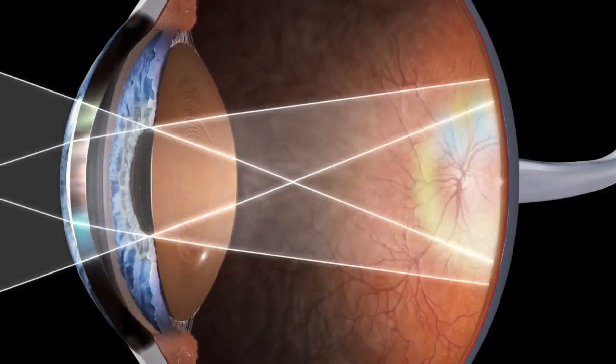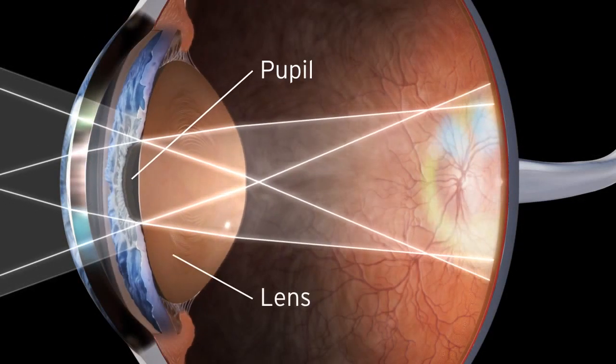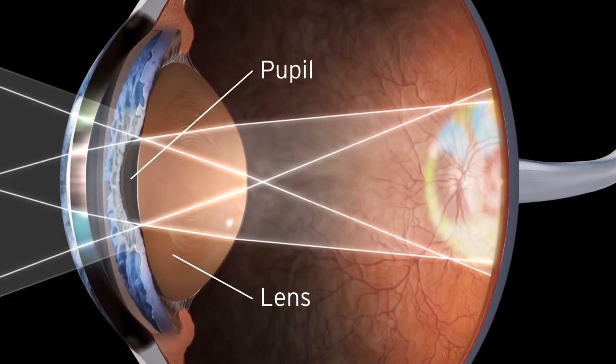Continual adjustments to the pupil and lens regulate the entry and focusing of light.